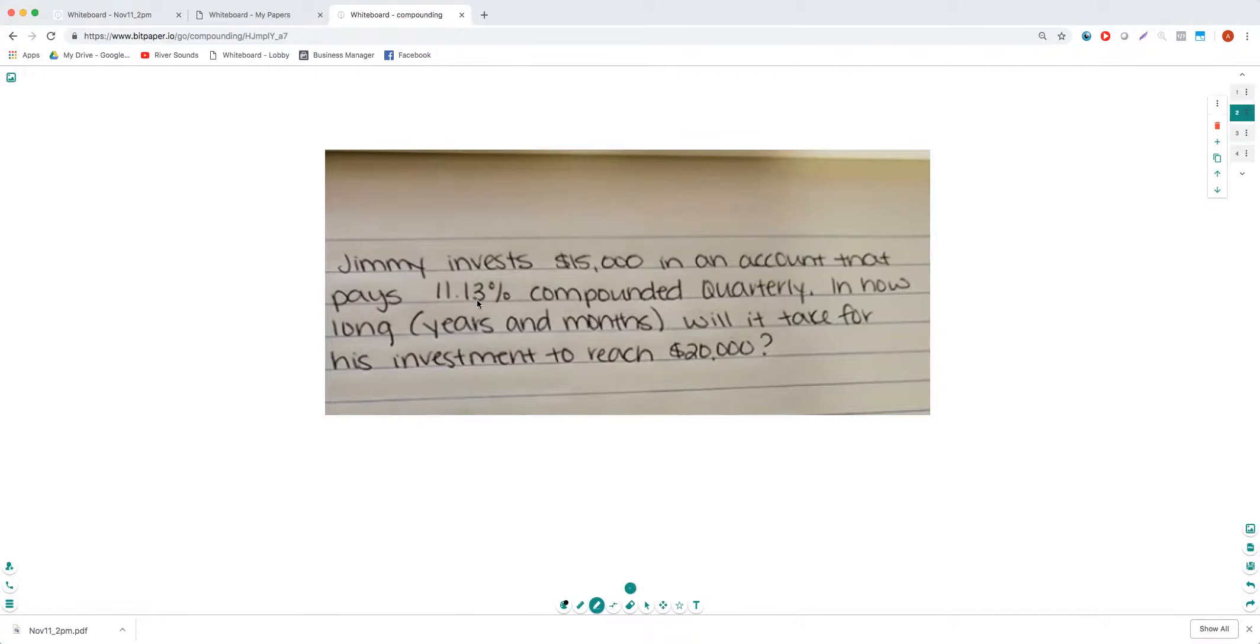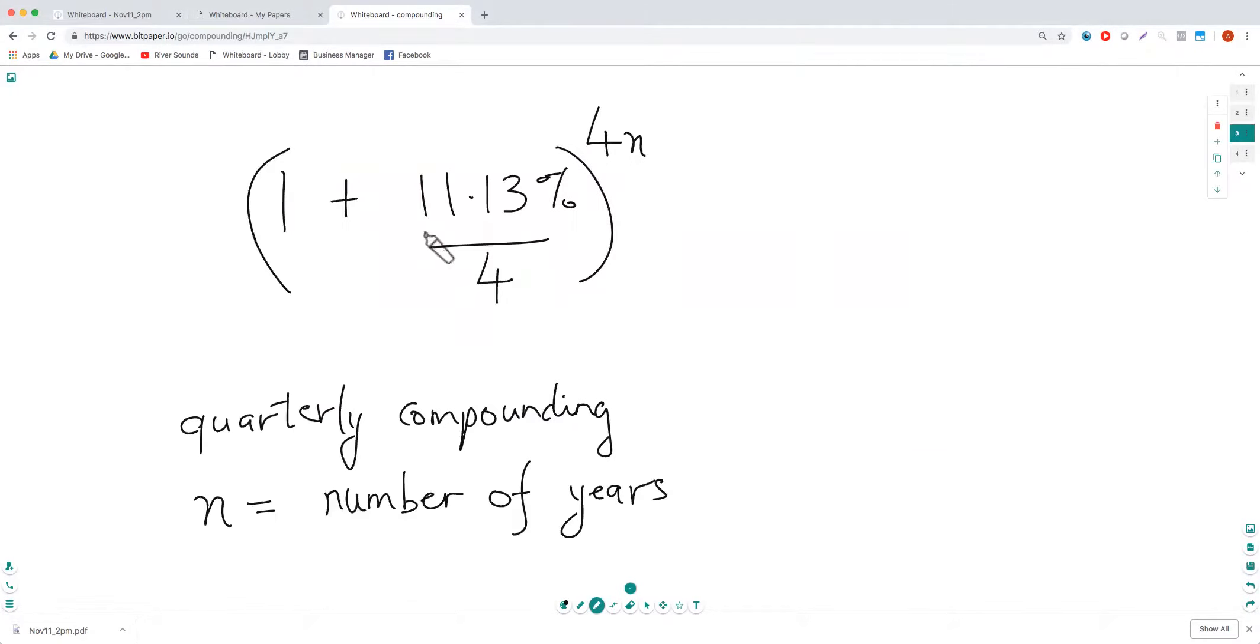And the thing to note here is compounded quarterly. So that's the most important part in the formula - that's your rate here. You divide it by 4 and then you raise it to 4n. That's a quarterly compounding formula where n is the number of years.